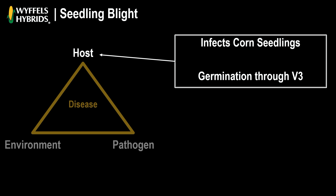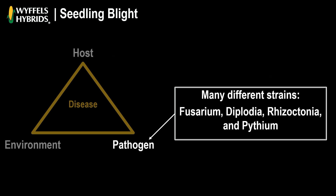The timing of infection is usually around germination through the V3 timeframe. There are actually many different pathogens and strains common in about every cornfield in the Midwest. We have Fusarium, Diplodia, Rhizoctonia, and Pythium. It's been found that there are about 14 different strains of Pythium and 8 different strains of Fusarium, so there are a lot of different pathogens to deal with.